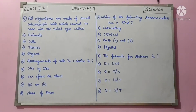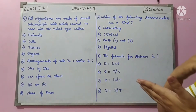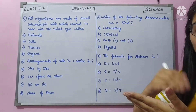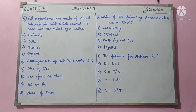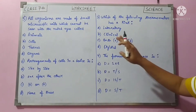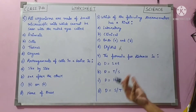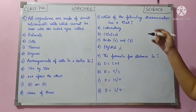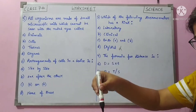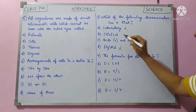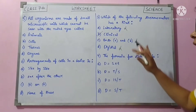Question number 3: which thermometer has a kink? A kink acts as a barrier that stops mercury from going back. Laboratory thermometer does not have a kink — when removed from liquid, mercury drops down. Digital thermometer is electrical and runs on a cell. So neither lab thermometer nor digital thermometer has a kink. Only the clinical thermometer has a kink. Answer is B.